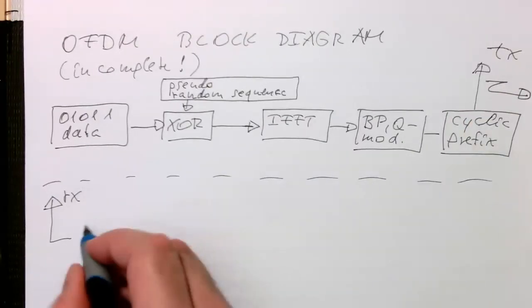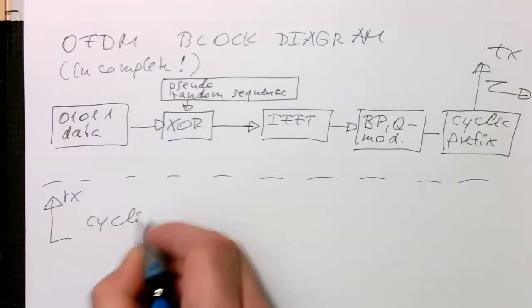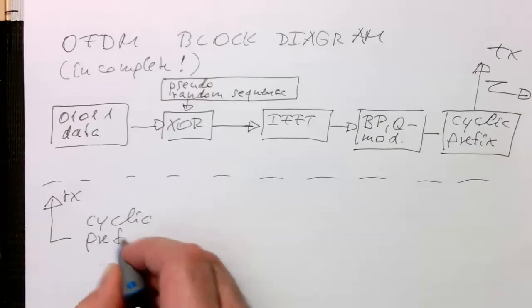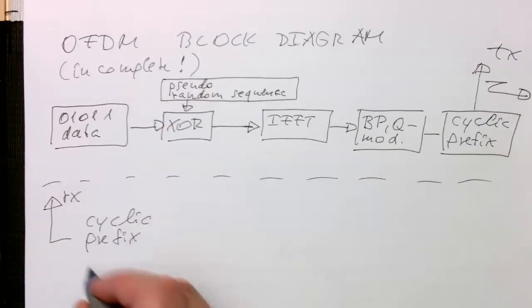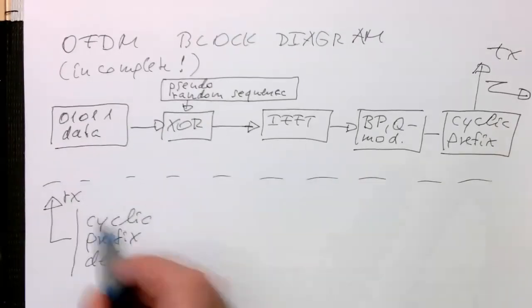Obviously now we have as a first stage the cyclic prefix detection. That's the first step. We need to find the start of the symbol.